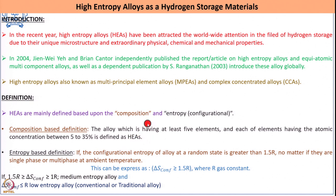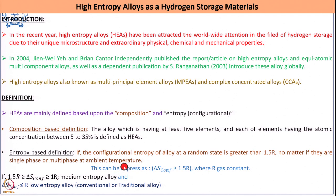Another definition is based on entropy: if the configurational entropy of the alloy at a random state is higher than 1.5R — independent of whether it is a single phase or multi-phase at ambient temperature — the alloy formed is known as a high entropy alloy. This can be expressed as the configurational entropy of mixing being greater than or equal to 1.5R, where R is the gas constant.